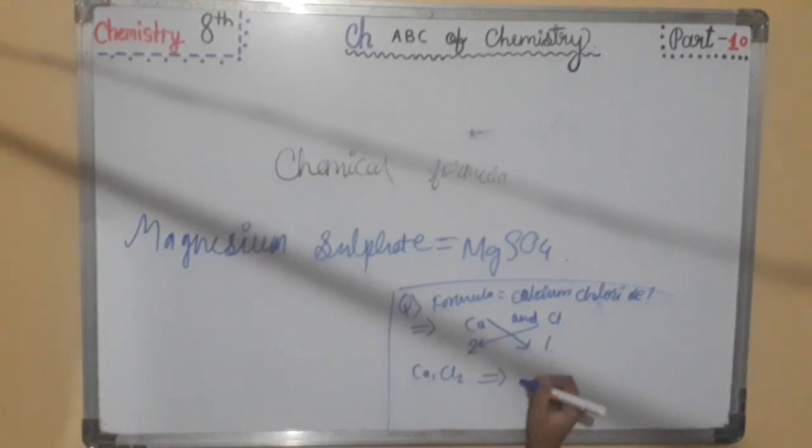Therefore, the formula we will obtain is CaCl2. Here 1 is there, we don't need to express 1. The above method of writing chemical formula is called the criss cross method.